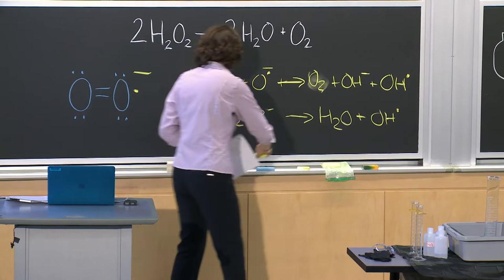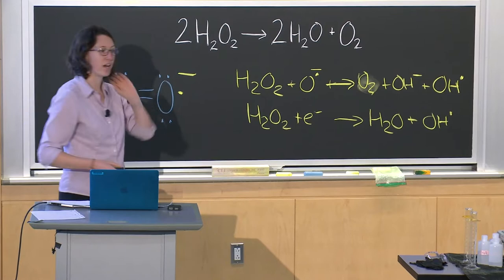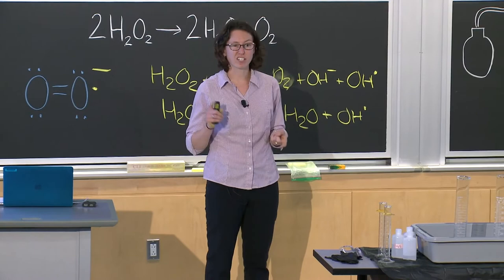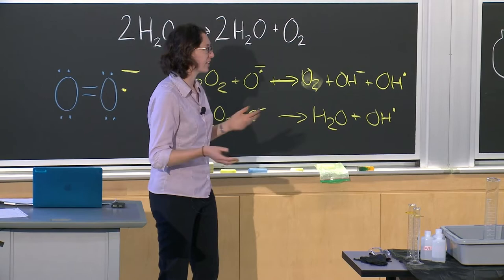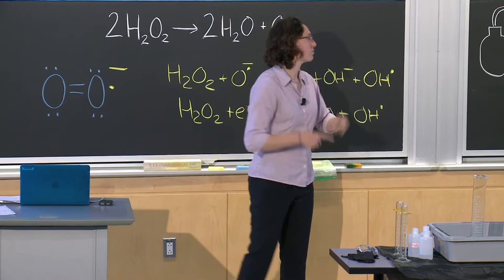We need a way to get rid of hydrogen peroxide in our body, and that is what catalase is for. All organisms have catalase — you can extract it from humans, all types of mammals, even plants. Cells do not want hydrogen peroxide in them. The catalase we're going to be using in the lab was extracted from cows.